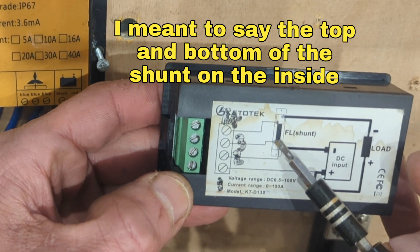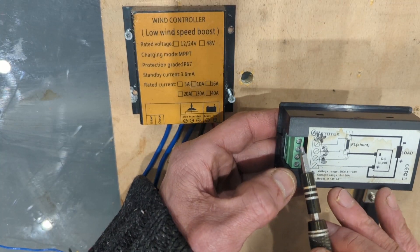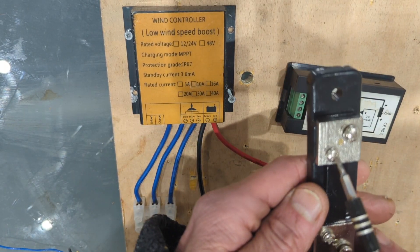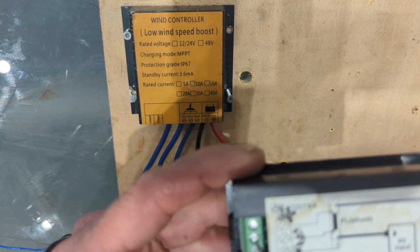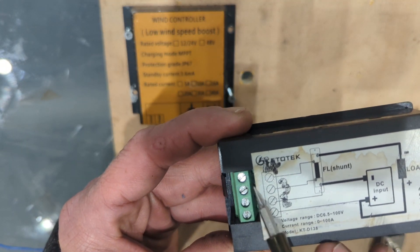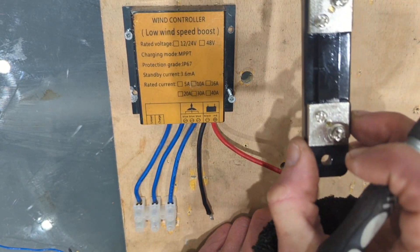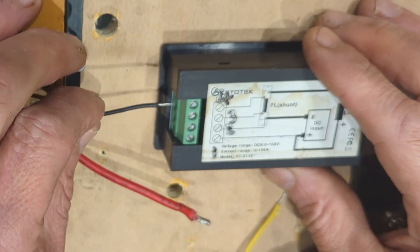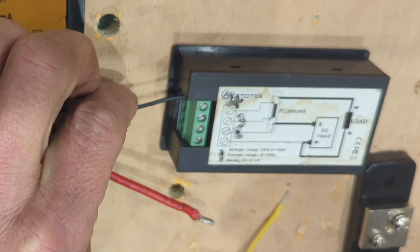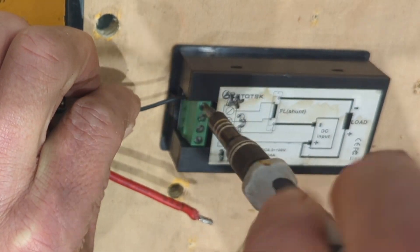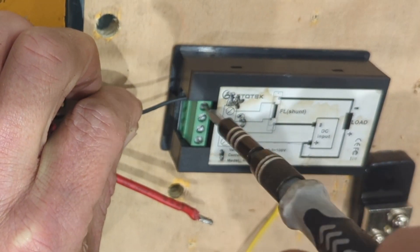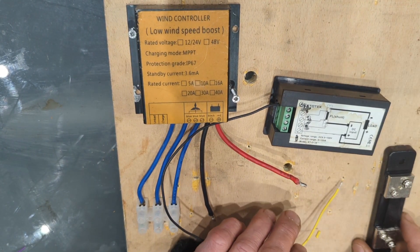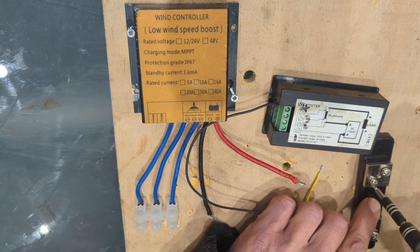So this one needs a wire going from here to the bottom of the shunt. So let's do that. So we're gonna get two wires. So this one, that one is going to go to the top shunt on the small side.